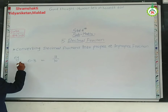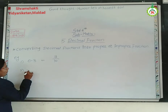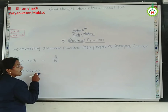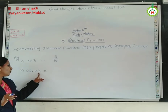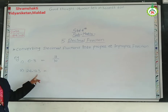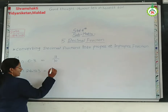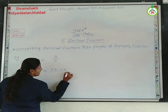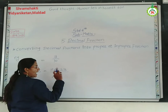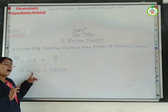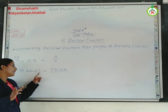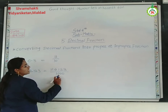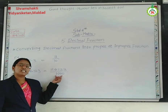Next example: 24.123. You write down this entire number as it is in the numerator, but without the point — so you write 24123 at the numerator. Now measure how many digits are after the point: 1, 2, and 3 — that is three digits. So you write down 3 zeros at the denominator, meaning 1000 at the denominator. So we get 24123 upon 1000.